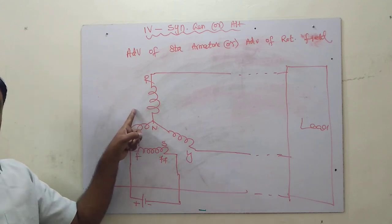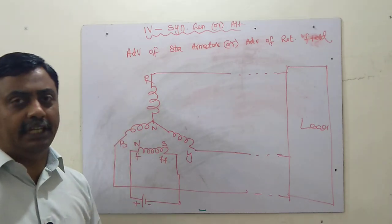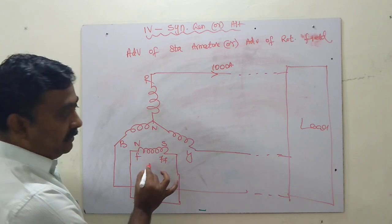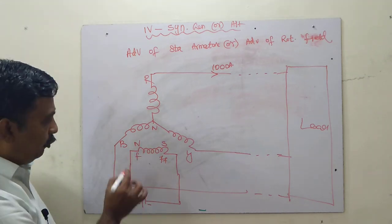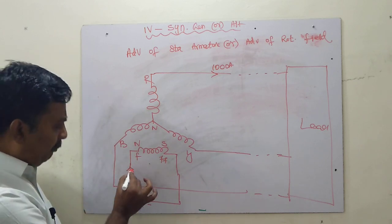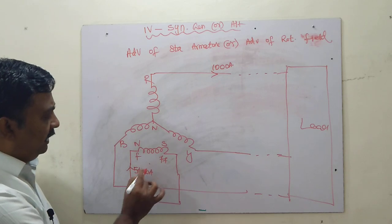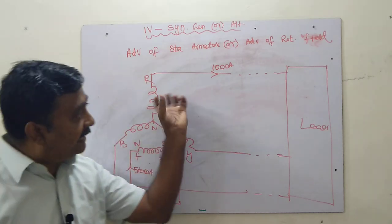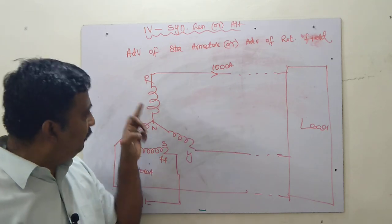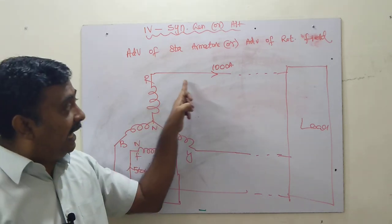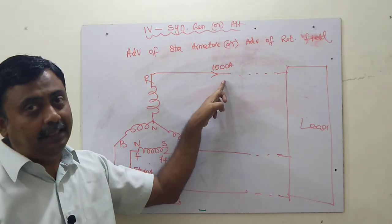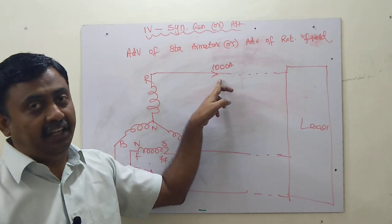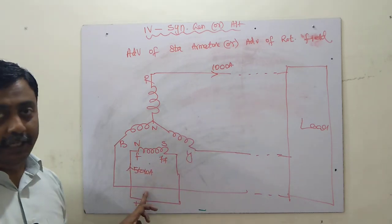What is the main advantage of having a stationary armature? The armature produces very high current — practically more than 1000 amps. The field, on the other hand, requires very little current — only about 5 to 10 amps maximum. If the armature were rotating, we would need slip rings and brushes to tap the energy, and at 1000 amps, the sparking at the brushes would be very high.